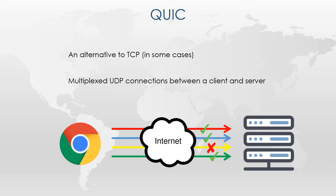How is this useful? Think of loading a web page. There are usually several items that need loading, like HTML code, scripts, images, and more. When the connection between the browser and the server is multiplexed, the client does not need to wait for one of them to finish loading before downloading the next.